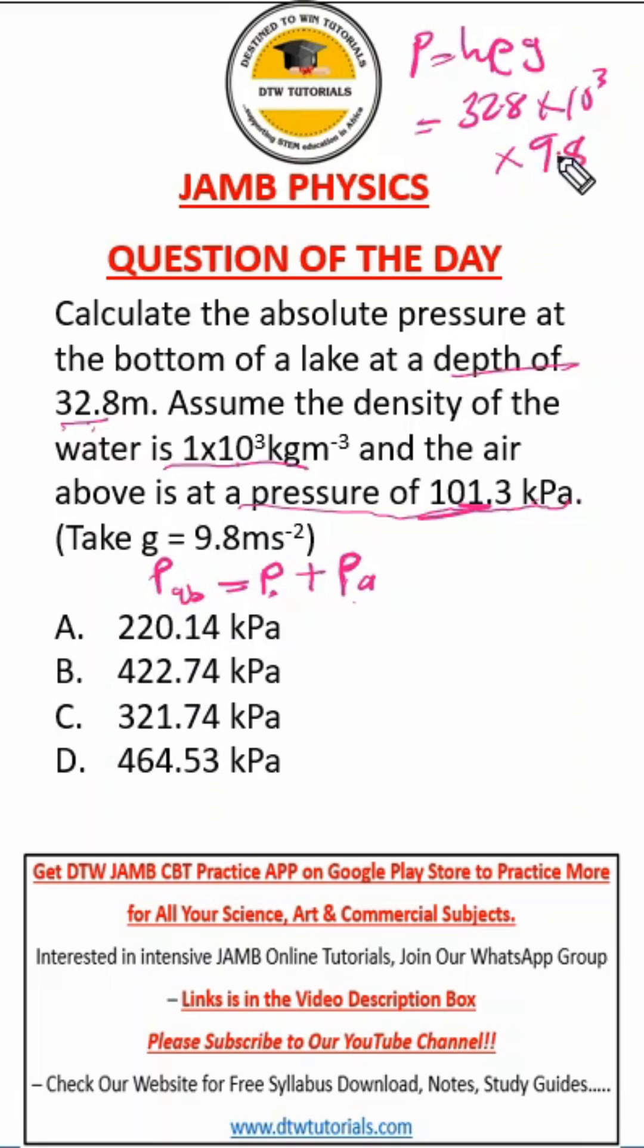When we multiply this, you can use your JAMB calculator. When you do this times this, multiply by this, 10 to the power 3 is 1000, that'll be 1000 times this times this. So we're going to get 321,440 Pascals.